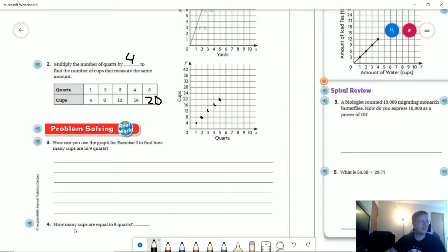Number four asks how many cups equal nine quarts. This continues following the same pattern. I could keep adding to the graph, which gives me 36, or since I know that quarts times four gives the answer, I can do nine times four to get 36.